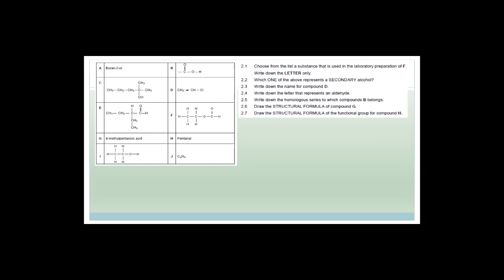This is a typical way that these questions start. We've got an organic chemistry question. There's butyn-2-ol and then there's the structure here which is a carboxylic acid. There is a single-bonded OH, there is CH2 double-bonded with CH and Cl, there's a CH3 group, 4-methylpentanoic acid which is an ester, pentanal, a hydroxyl group, and C4H8.